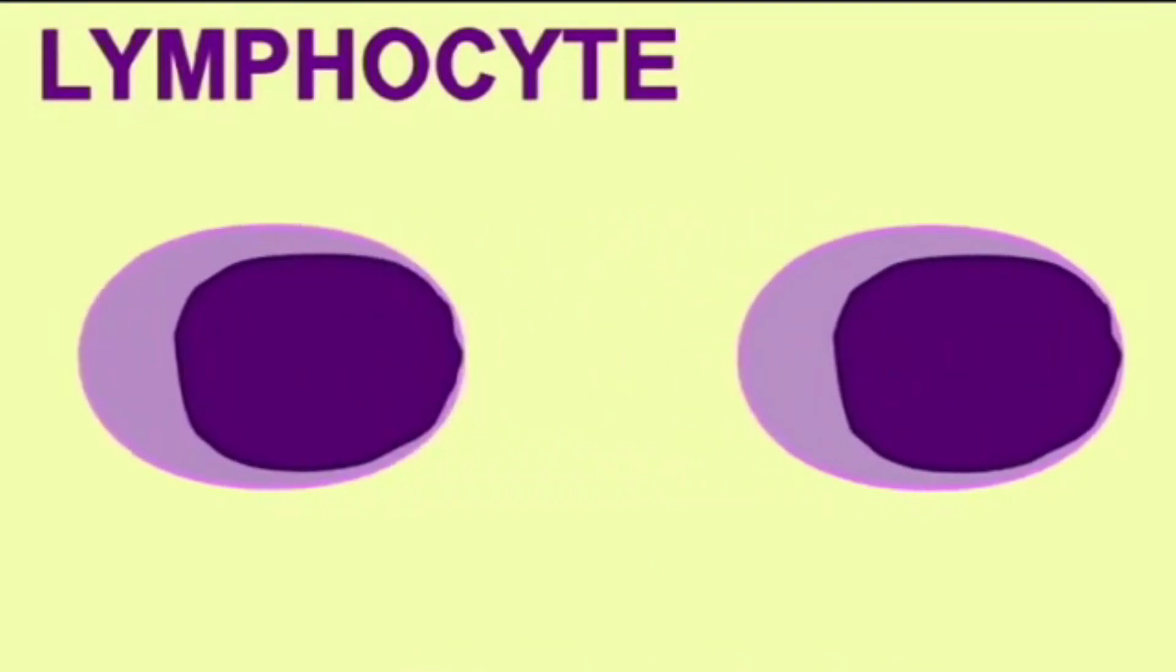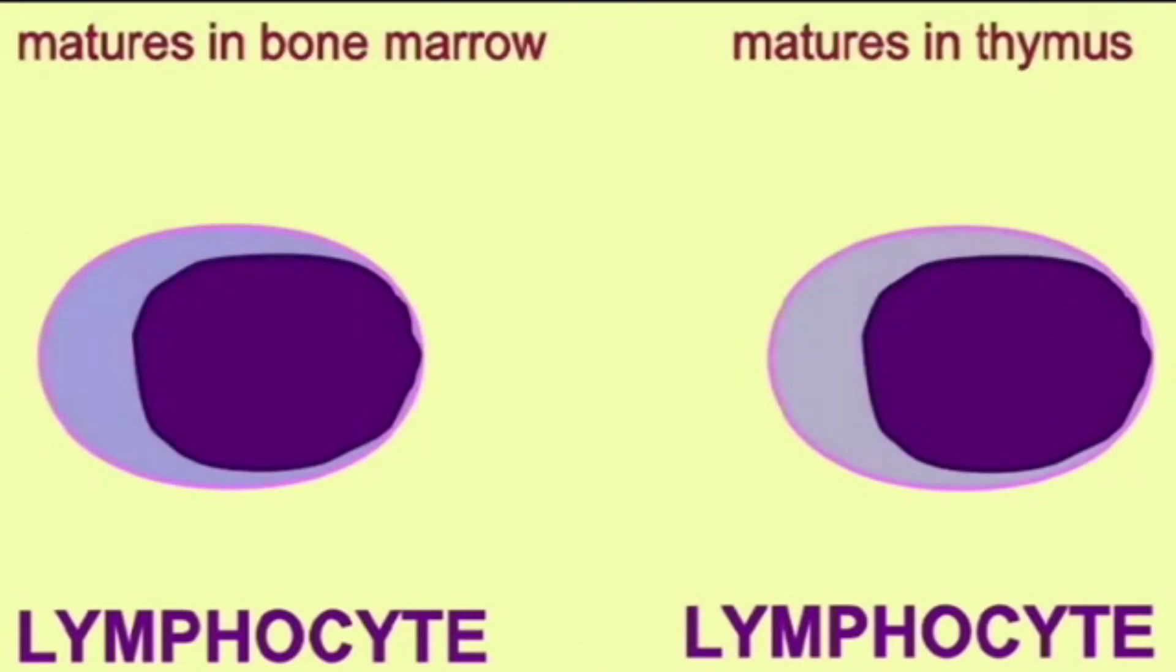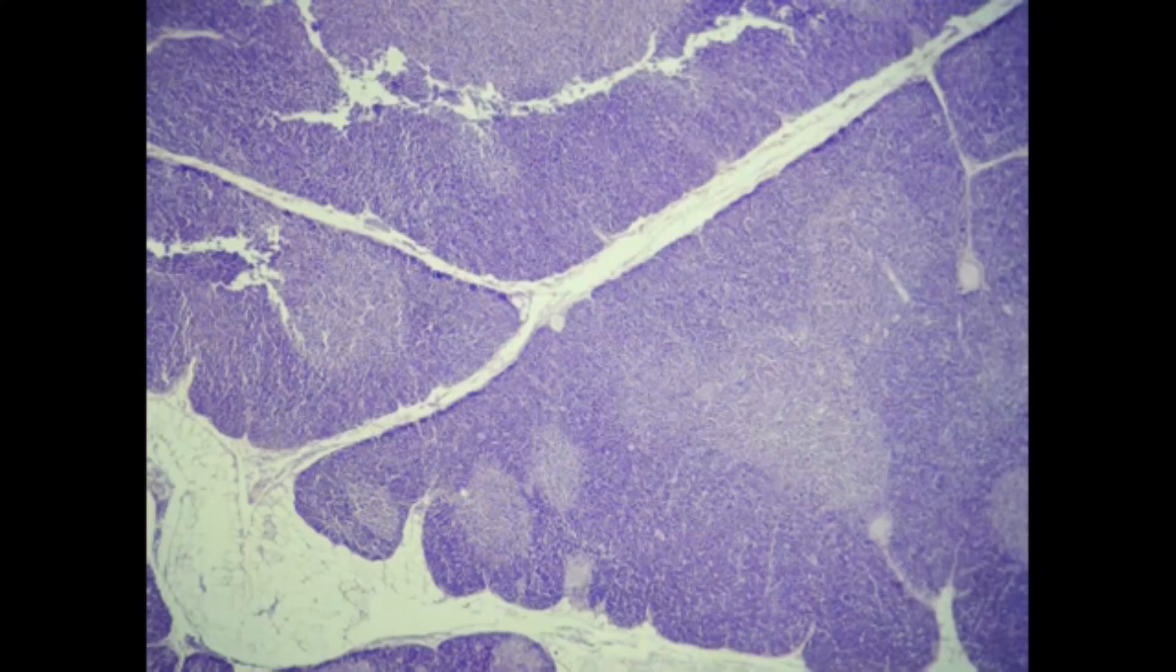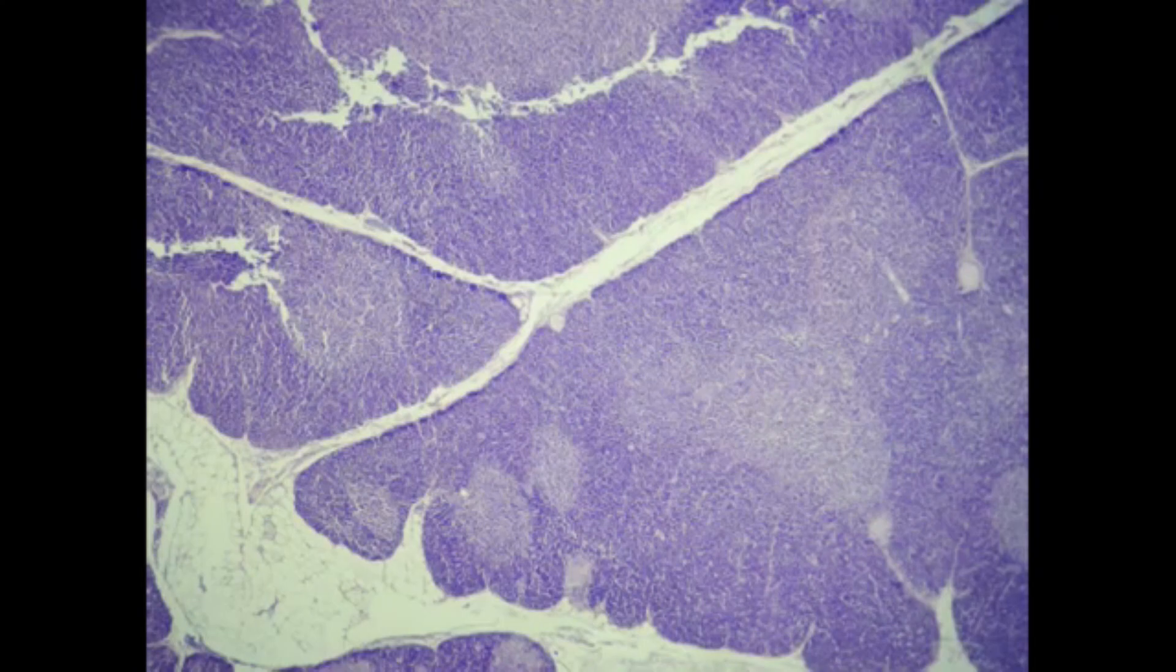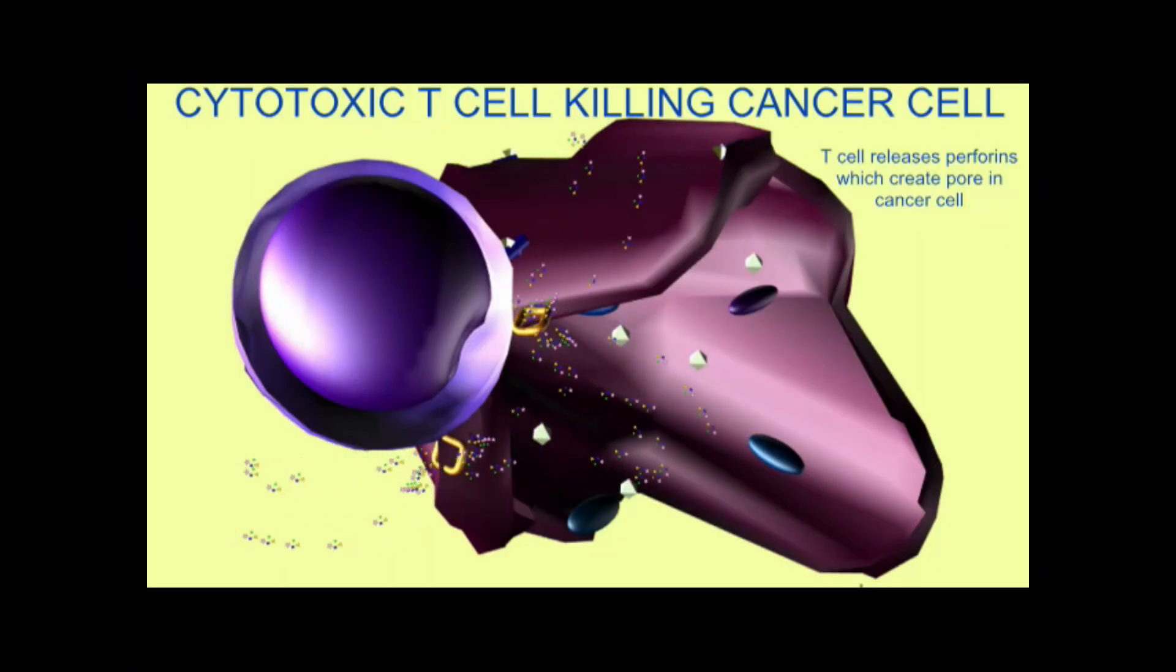There are two types of lymphocyte. Those that mature in the thymus are known as T lymphocytes which have a number of diverse roles including preventing autoimmune diseases and fighting cells which are cancerous or infected by virus.